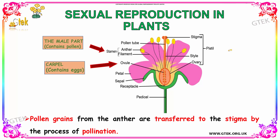In the female part, it consists of the stigma, style, and ovary. Inside the ovary, the ovule is present. You can see the ovule here. This part is called the sepal. It is the receptacle, which is placed under the ovary.